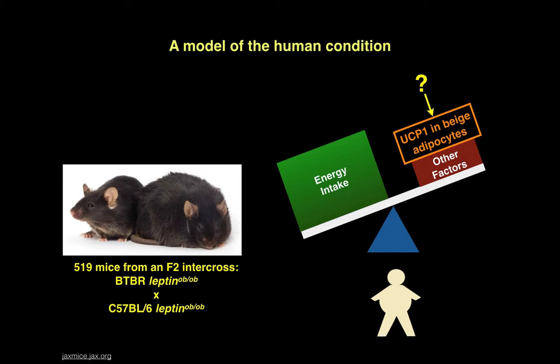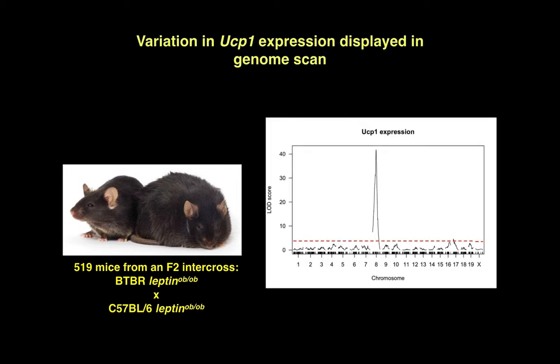To look into this, we wanted a model of the human condition. We looked at 519 mice from an F2 intercross between the BTBR and C57BL6 strains, chosen by the Alan Addy Lab because they both have different reactions to not producing leptin — some become obese and some don't — which models what happens in humans. The first step was to confirm variation in UCP1 expression within these mice. We looked at a genome scan plotting UCP1 expression and found a big peak on chromosome 8, which is where the UCP1 gene is actually located, indicating significant variation in UCP1 expression at that specific genetic locus.